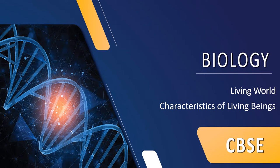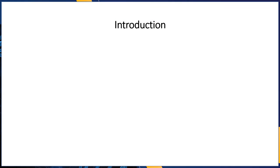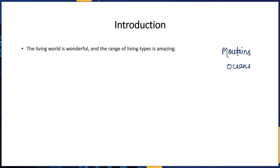Hello students, let us begin our first topic in biology class 11, which is Living World. Let us first begin our discussion with the characteristics of living beings. Many things around us — mountains, oceans, plants — these things can be categorized into living or non-living. The living world is wonderful and the range of living types is amazing.